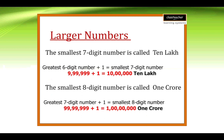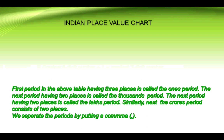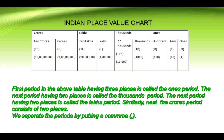The smallest eight-digit number is called one crore. In the Indian place value chart shown above, different periods are mentioned. The first period has three places and is called the ones period. The next period having two places is called the thousands period. The next period having two places is called the lakhs period. Similarly, the crores period consists of two places. We separate the periods by putting a comma.